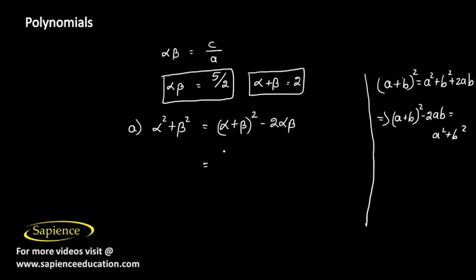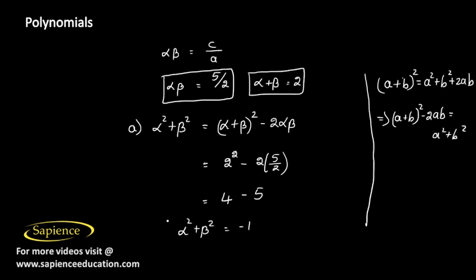Substituting the values: α² + β² = 2² - 2 × (5/2) = 4 - 5 = -1. So α² + β² = -1.